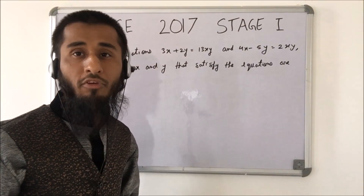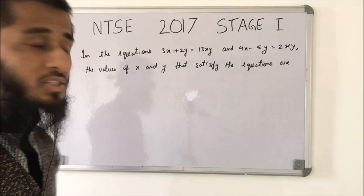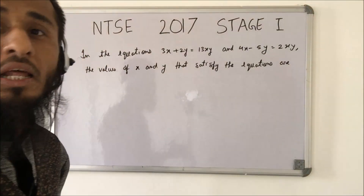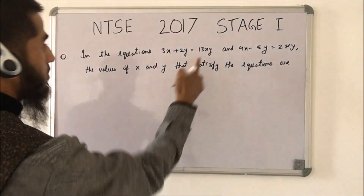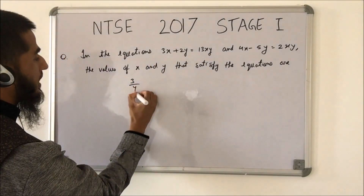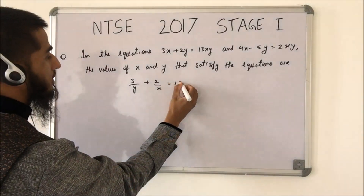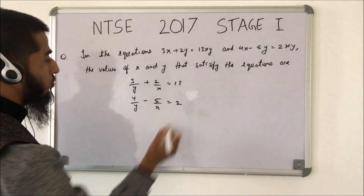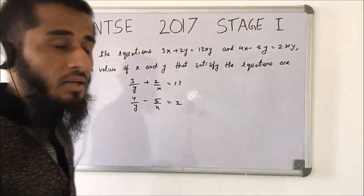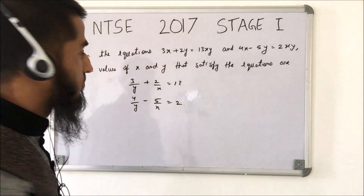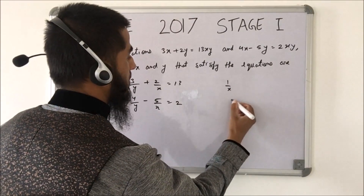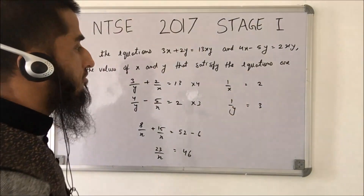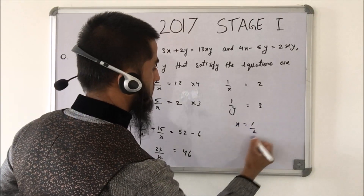Two equations are given and we need to find the values of x and y. These equations have x, y, and the product of x and y. So let's make them linear by dividing: we get 3/y + 2/x = 30 and 4/y − 5/x = 2. Letting 1/y and 1/x be the variables and solving, we get 1/x = 2 and 1/y = 3, so x = 1/2 and y = 1/3.